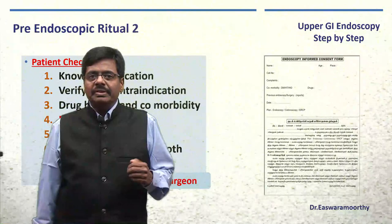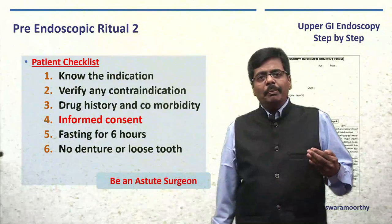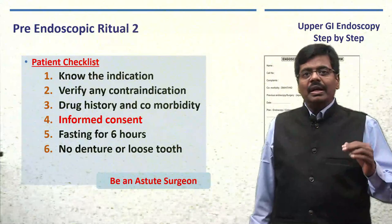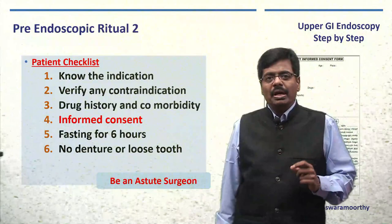The third important thing is drug history. For patients with diabetes, COPD, or ischemic heart disease, evaluate and assign an ASA grade. If the patient is beyond ASA grade 3, think twice before proceeding — preferably have an anesthetist present. If they are on clopidogrel or aspirin, you may need to stop these five days before the procedure, as any biopsy may risk excessive bleeding.